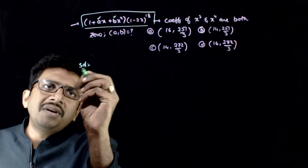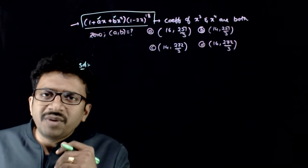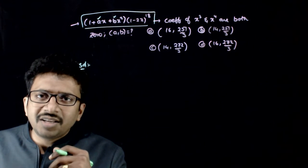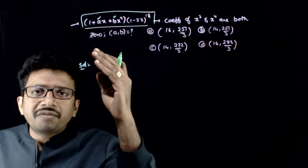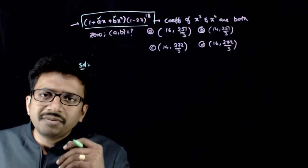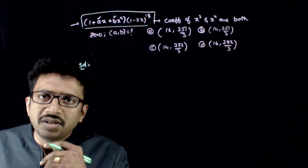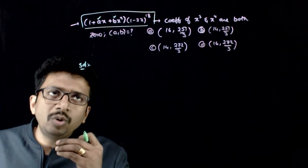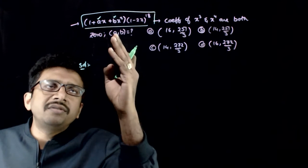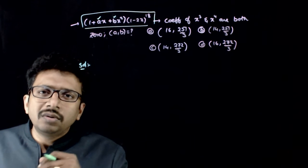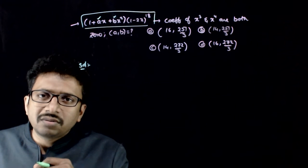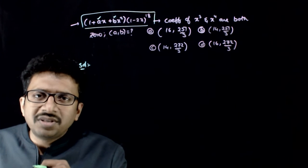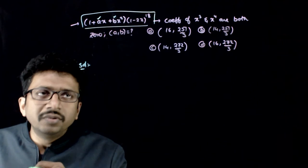You are given two pieces of information: the coefficient of x³ is 0, and the coefficient of x⁴ is 0. From these two conditions, you are asked to find two unknowns. I hope this is straightforward to do.